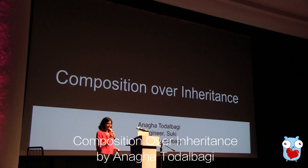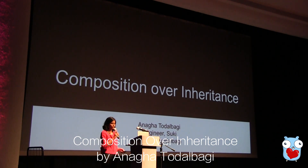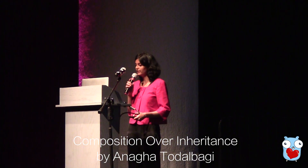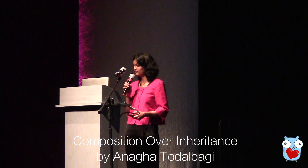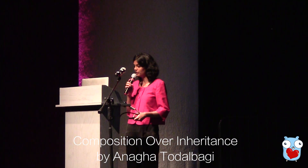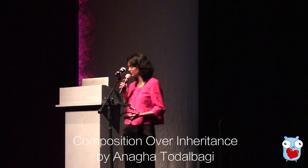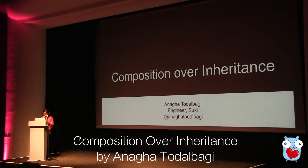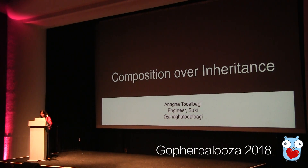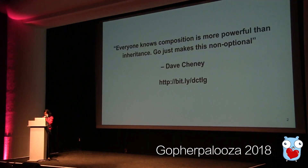Hi, my name is Anika and I'm a backend engineer at Suki, a Bay Area startup that's building an AI assistant for doctors. I primarily work in Go. Last year, around this time, I started writing in Go and was introduced to how Go favors composition over inheritance. In this talk, I'll describe this concept and go through some examples in Go to understand the use cases. At the end of the talk, you will have enough information to follow and appreciate this concept. Everyone knows composition is more powerful than inheritance — Go just makes this non-optional. Dave Cheney said this at one of his keynotes.